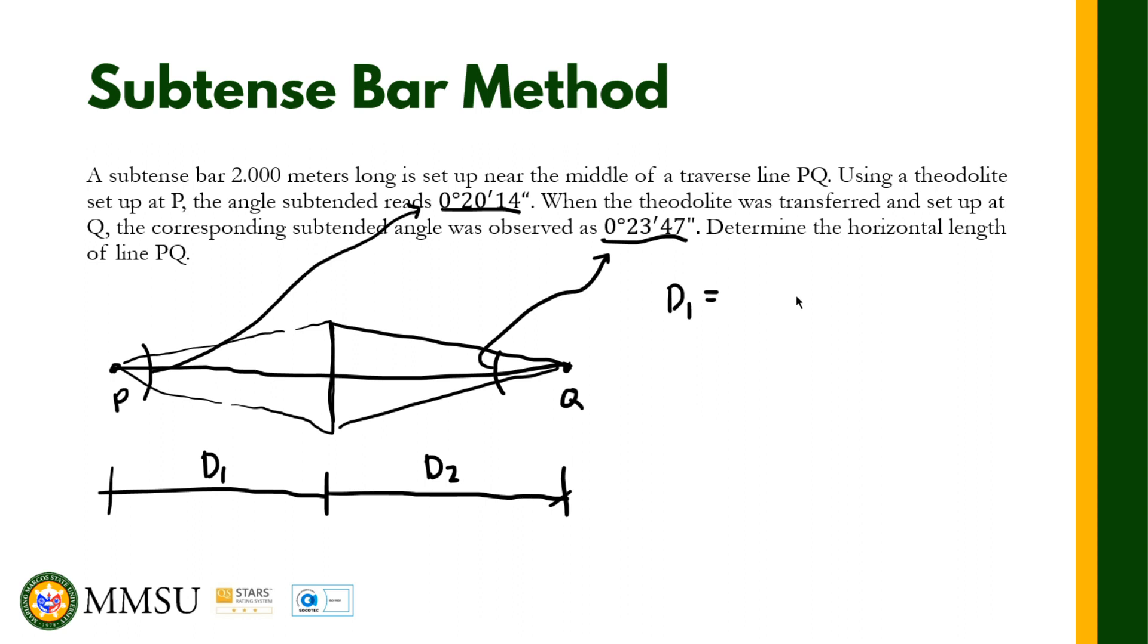For d sub 1, we have cotangent of alpha over 2, that's 20 minutes 14 seconds divided by 2. Cotangent is not in your calculator, so what you're going to do is use 1 divided by tangent of this angle. You will come up with 339.81 meters.